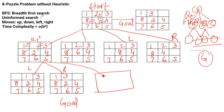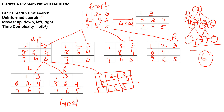If that were not the goal state, we would have to make a third branch as well — we could bring a tile from below into the blank's position. But since our goal state was already found, we stop here.